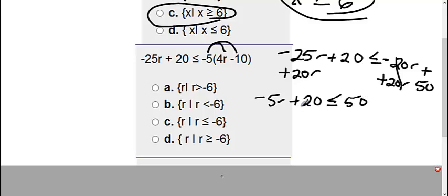Then I need to move this 20 to the other side. So I'm going to subtract 20 on both sides. So now I have negative 5r is less than or equal to positive 30.